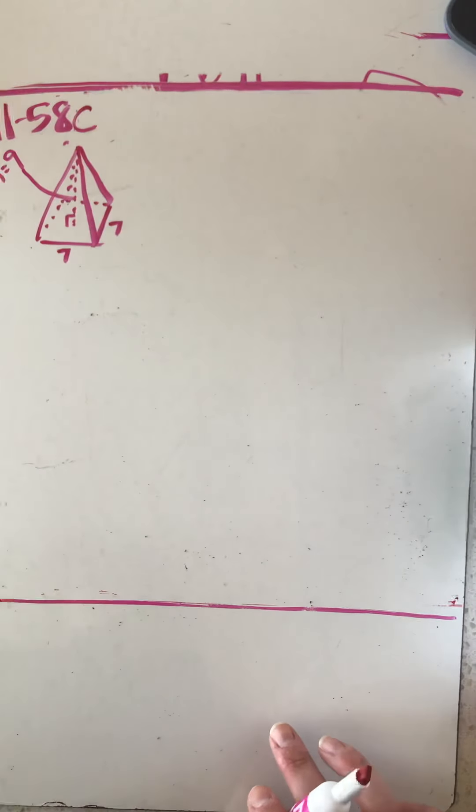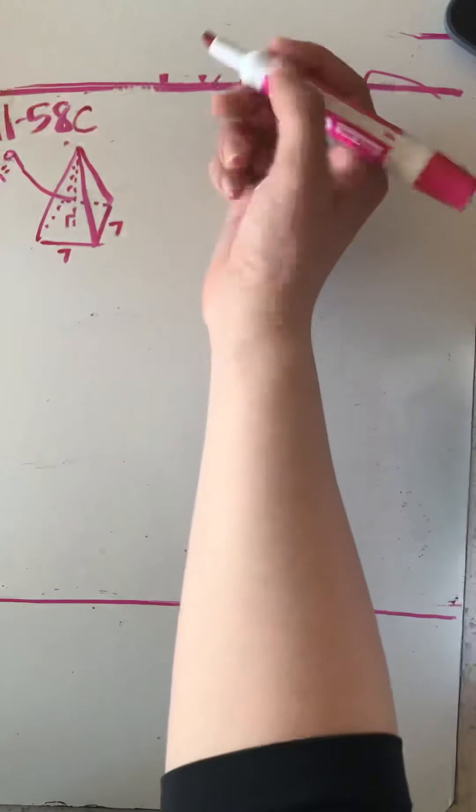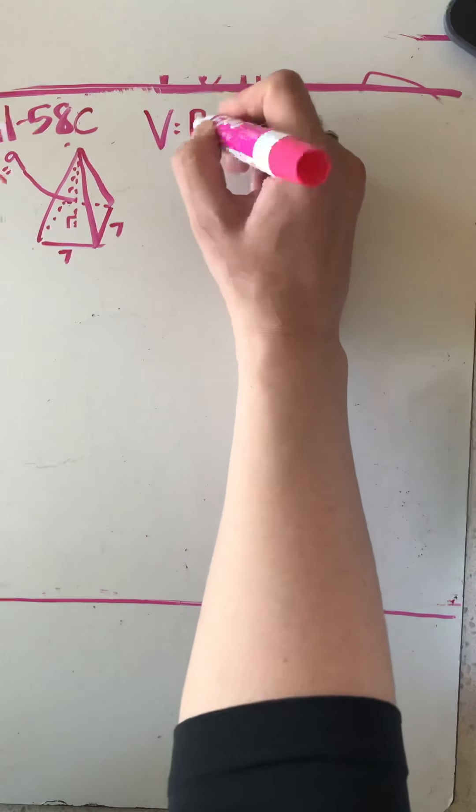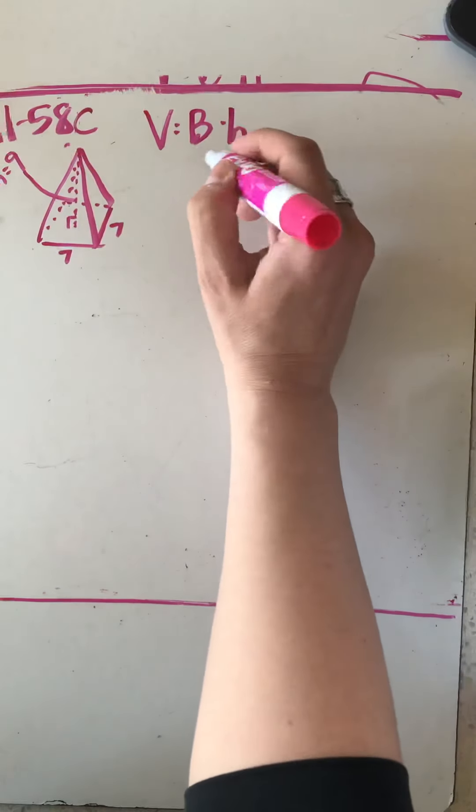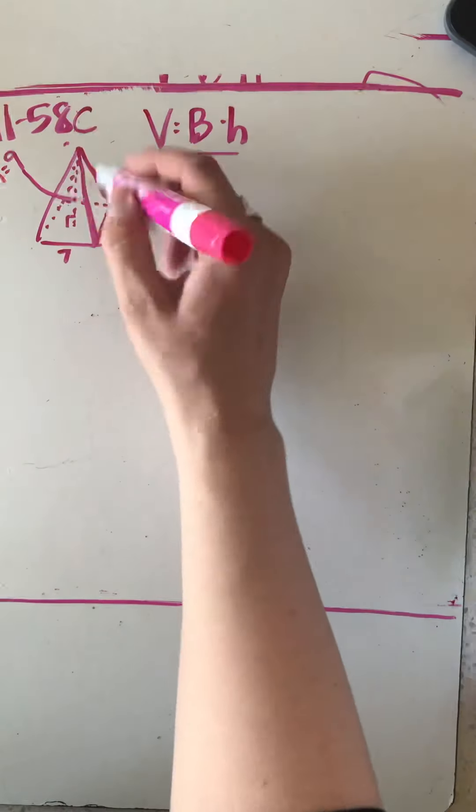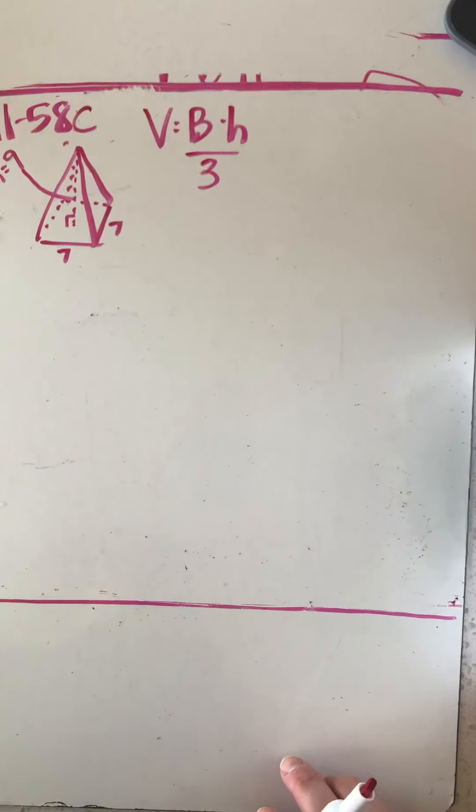In order to find the volume of a square pyramid or any pyramid you're going to do base area times height and you are going to have to divide by three because that is one-third of a prism.